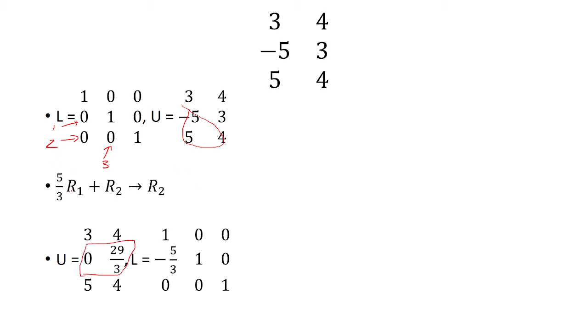Now, what did we do? We multiplied by 5 thirds. So take the opposite of what you multiplied row 1 and put it in this entry right here.